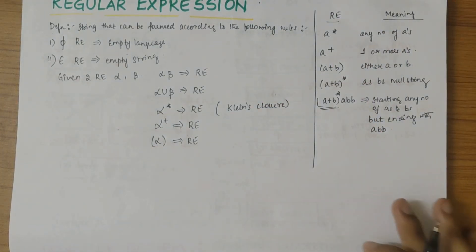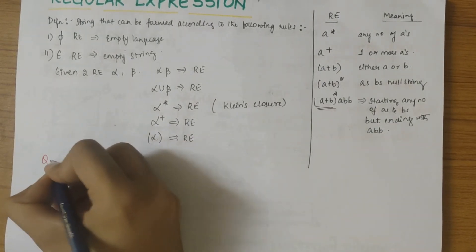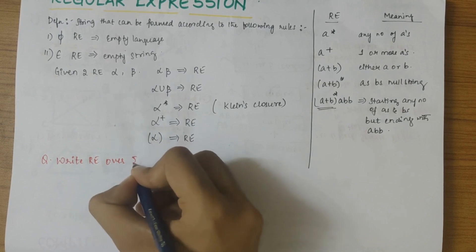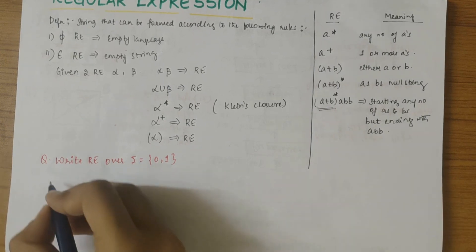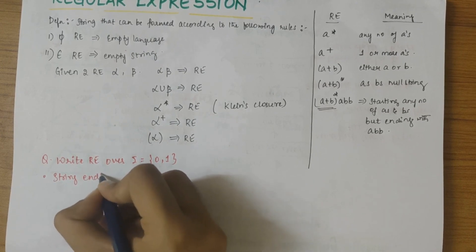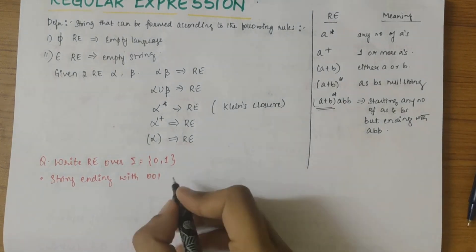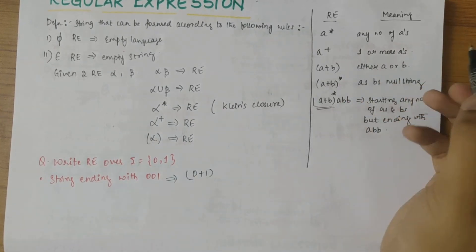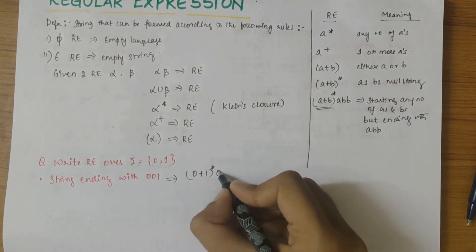Now let's solve simple questions. Write a regular expression over sigma = {0, 1}. The first regular expression we need to write is for strings ending with 0-0-1. It would be: any starting characters (0+1)-star, followed by the ending 0-0-1.